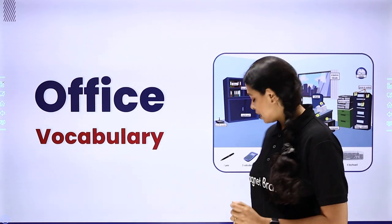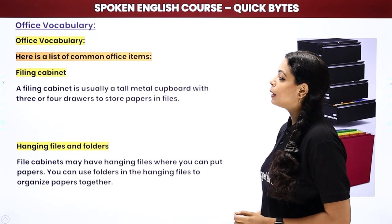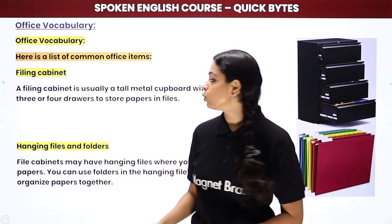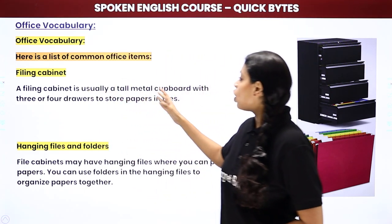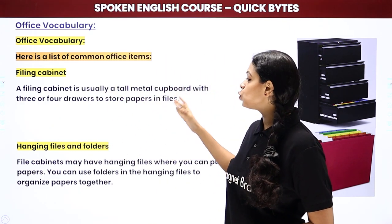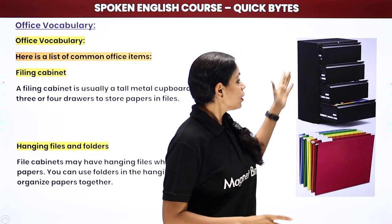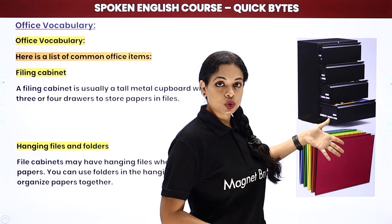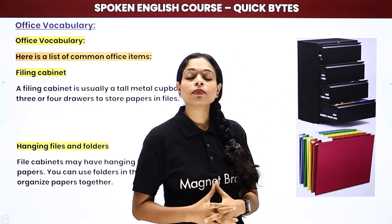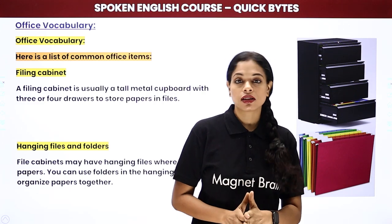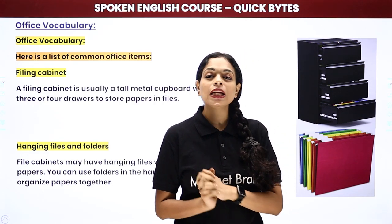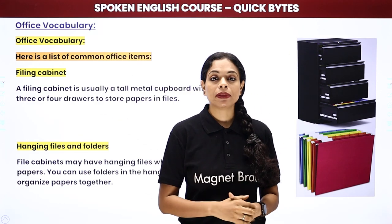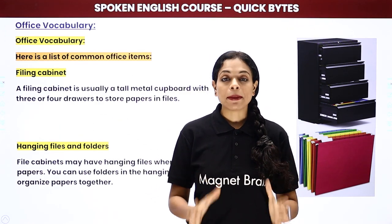Let's start office vocabulary. First we have a filing cabinet. What is a filing cabinet? It's a tall metal cupboard with three or four drawers used to store papers and files. This cupboard has different drawers, and in each drawer you keep separate files. Basically it's a way to safely organize and store papers. This is called a filing cabinet.